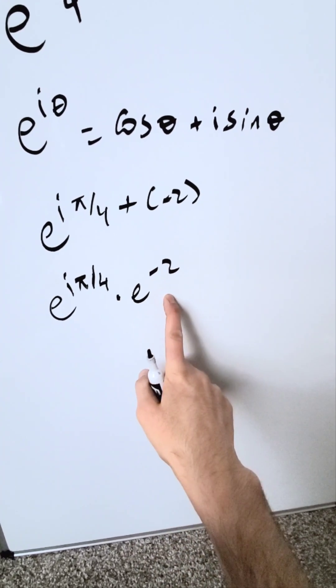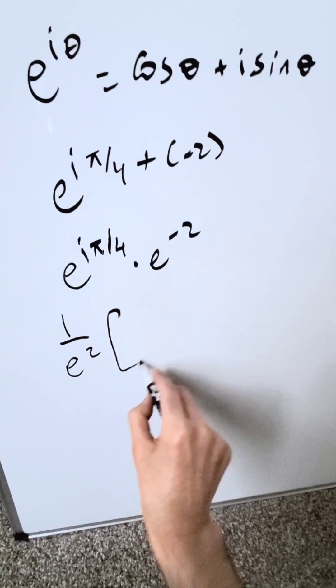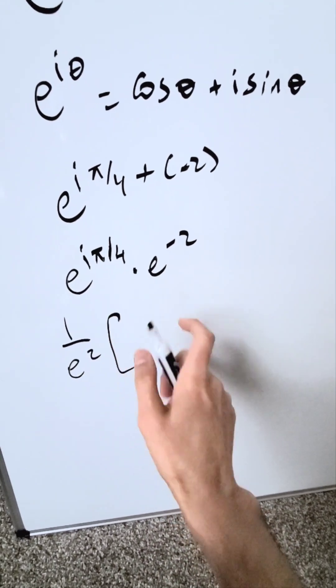This right here is equivalent to that. This is going to become a reciprocal. I have 1 over e square, and then I am going to bring in Euler's identity and open this up.